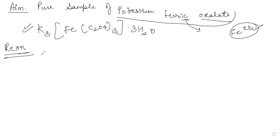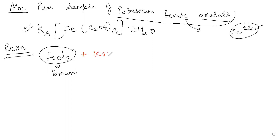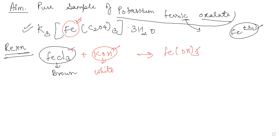First of all, we take FeCl₃, which is brown in color, along with KOH, which exists in pellet form and is white in color. We want Fe(OH)₃ — ferric hydroxide. We prepare it using FeCl₃ (brown powder) and KOH (white pellets), and that gives us Fe(OH)₃. This is the first reaction involved.